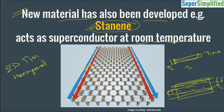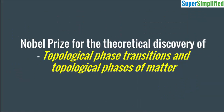You have superconducting edges of this 2D hexagonal tin structure known as stannine. This is a material which has superconductivity and may be used in quantum computers and all futuristic applications. This is a practical discovery.